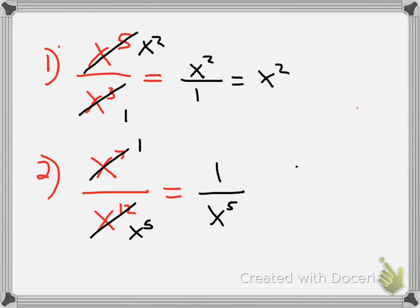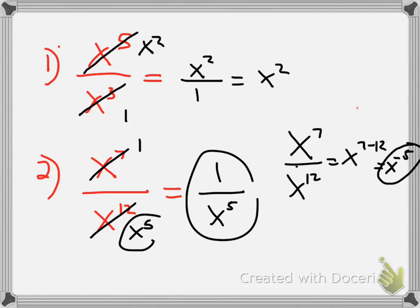If I were to do the other way, we do x to the 7th over x to the 12th, remember, it's going to be x to the top minus the bottom, which is x to the negative 5th power. And these, in fact, are equivalent. 1 over x to the 5th is equivalent to x to the negative 5th power.